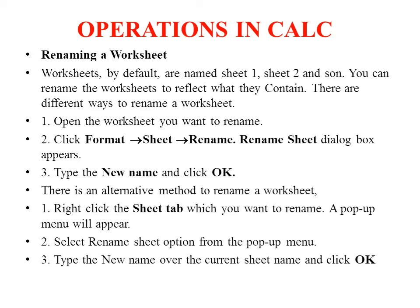Next is renaming a worksheet. For formatting the worksheet, we have an option called Renaming. A new worksheet may have an untitled document by default, with default titles like Sheet1, Sheet2, so we need to rename it. To rename, open the sheet, go to the Format option, select Sheet, and then choose Rename Sheet.